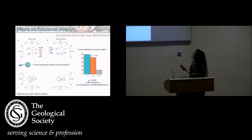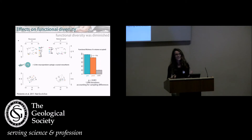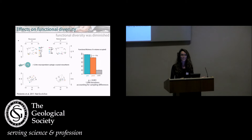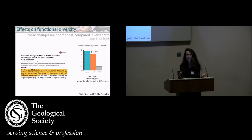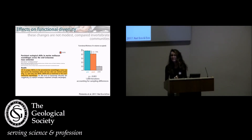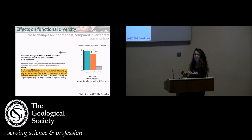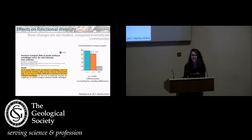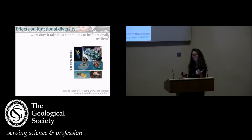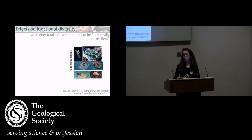We also found a functional shift of 20%. So seven functional entities were lost, 15% of the functional space was lost, and 20% shift. This sounds like modest numbers, but when you compare it with all other studies using a similar approach, it's actually quite large. Similar studies found that after mass extinction events where you lose 70–90% of taxa, only one function is lost.